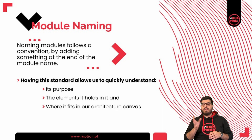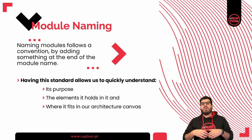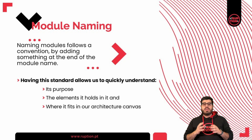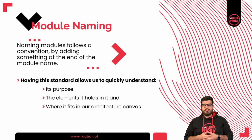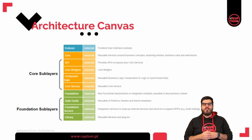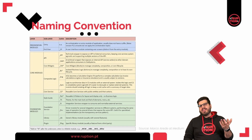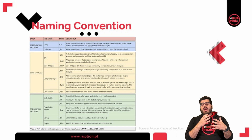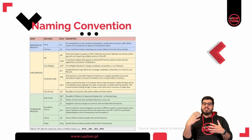Now that we have our modules organized, let's name them. Naming modules follows a convention by adding something at the end of the module name — this is called a suffix. Having this standard allows us to quickly understand its purpose, the elements inside it, and where it fits in our architecture canvas. This is really important because OutSystems has built-in tools that will tell us if our modules are properly placed in our architecture canvas. On our previous video we talked about this and its sub-layers — if you have not seen it, we advise you to do so, as it might be hard to understand what is coming next. The architecture canvas sub-layers are what map our naming conventions.